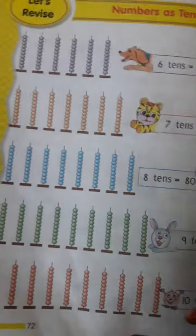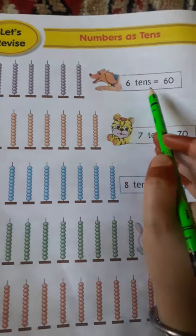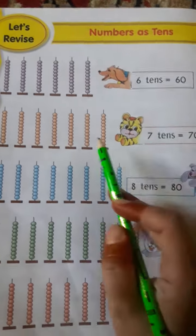Here they have written 6 tens, that means 60. 7 tens means 70.